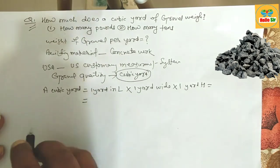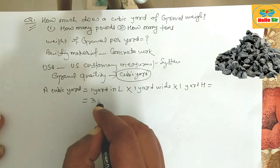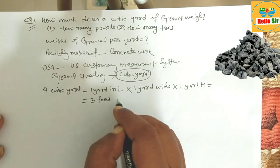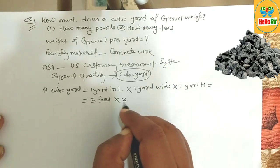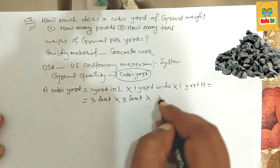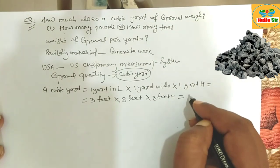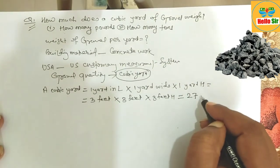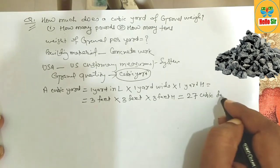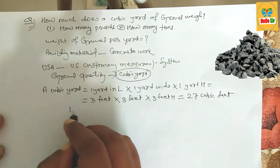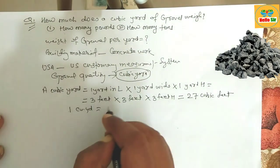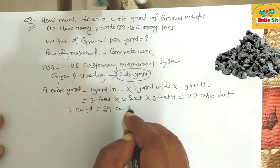If we convert to cubic feet, this equals three feet in length, three feet in width, and three feet in height. Multiplying these together gives 27 cubic feet. So one cubic yard equals 27 cubic feet.